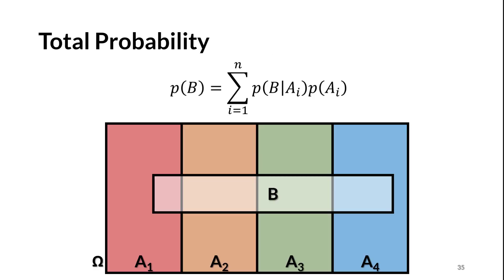The equation extends to any number of subcases. As long as the A parts form a partition, we can compute P(B) from any number of subcases — this is the form generally seen in U.S. Army Corps of Engineers guidance. This can also be used to compute the probability of some third event C, which is a function of A and B.